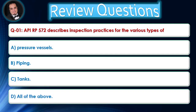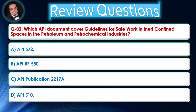Review Questions. Question 1: API RP 572 describes inspection practices for the various types of — Answer is A. Question 2: Which API document covers guidelines for safe work in inert confined spaces in the petroleum and petrochemical industries? — Answer is C.